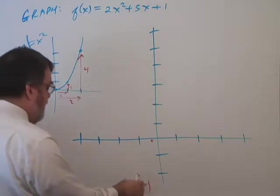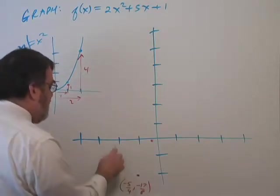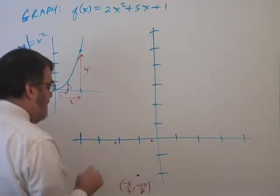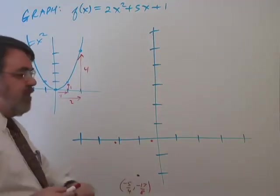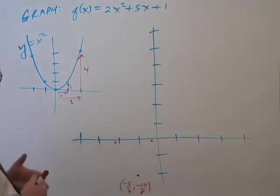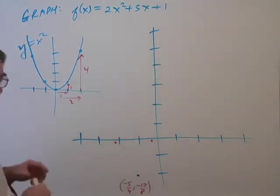So instead of right one up one, I went right one up two. And so if I go left one unit, I have to go up two units to there. So now I am estimating negative five fourths and negative 17 eighths, and now we have fractions there.